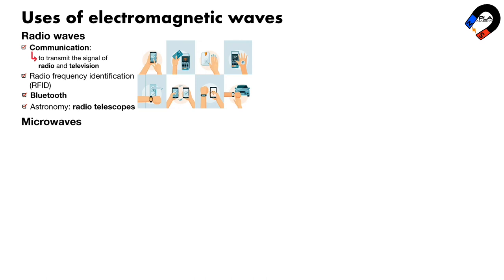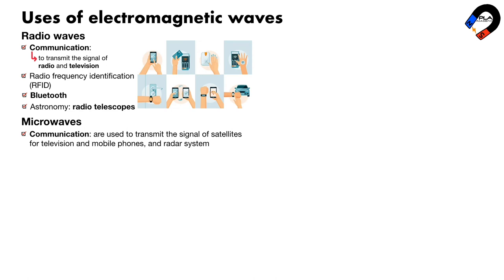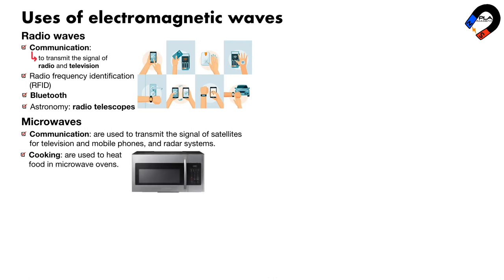Microwaves. Communication: microwaves are used to transmit signals for satellites, television, and mobile phones. They are also used in radar systems. Cooking: microwaves are used to heat food in microwave ovens. They work by causing the water molecules in food to vibrate, which creates heat.